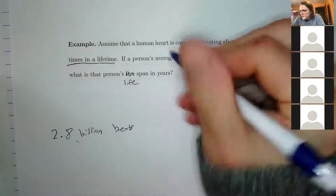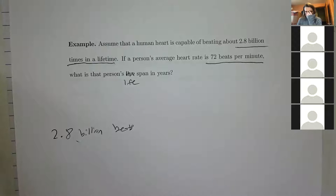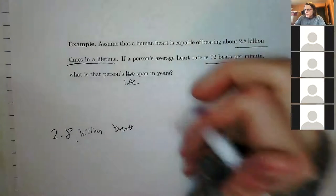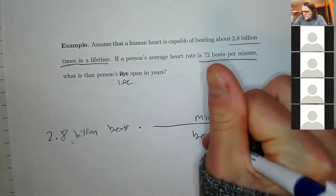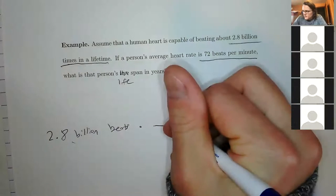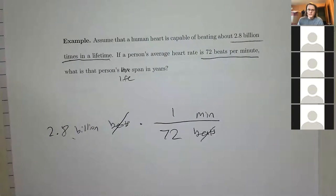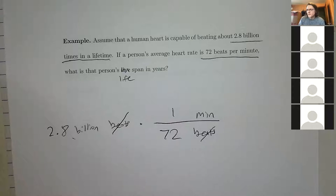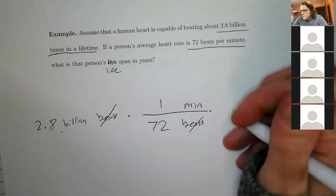Strategy: use the 72 beats/minute relationship to get into minutes, then convert minutes to hours to days to years. So start with 2.8 × 10⁹ beats. Multiply by (1 minute / 72 beats) — beats cancel, now in minutes. Then multiply by (1 hour / 60 minutes), then by (1 day / 24 hours).